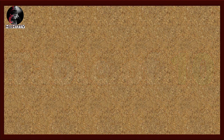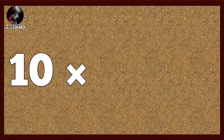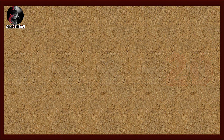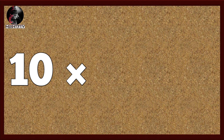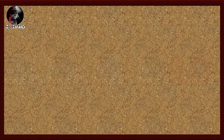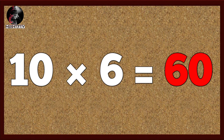Table of ten. Ten one's are ten, ten two's are twenty, ten three's are thirty, ten four's are forty, ten five's are fifty, ten six's are sixty.